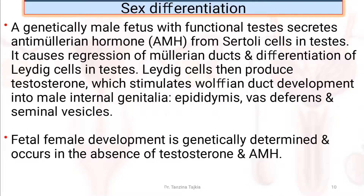Leydig cells then produce testosterone, which stimulates Wolffian duct development into male internal genitalia — i.e., epididymis, vas deferens, seminal vesicle, etc. Female fetal development is genetically determined and occurs in the absence of testosterone and anti-Müllerian hormone.